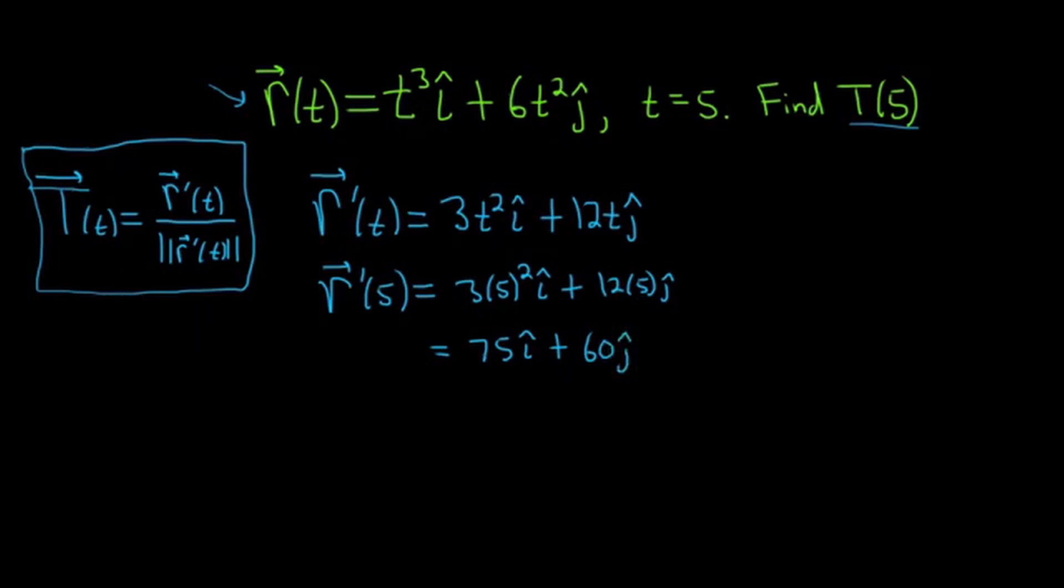Now all we have to do is find the magnitude of this. So the magnitude of r prime of 5 is going to be equal to the square root, and then we're going to square the components. So 75 squared plus 60 squared.